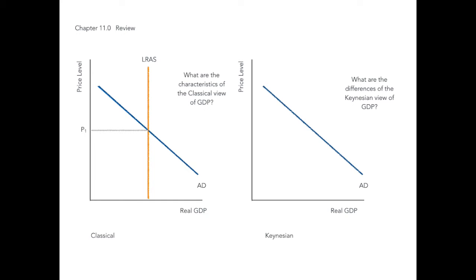In the depth of the depression, Keynes did not totally reject classical theory, but held that adjustments in the long run would take too long. He stated that in the long run, we are all dead. The classical view held that in the long run, an economy's productive capacity is not dependent on prices, represented by the vertical long-run aggregate supply curve.